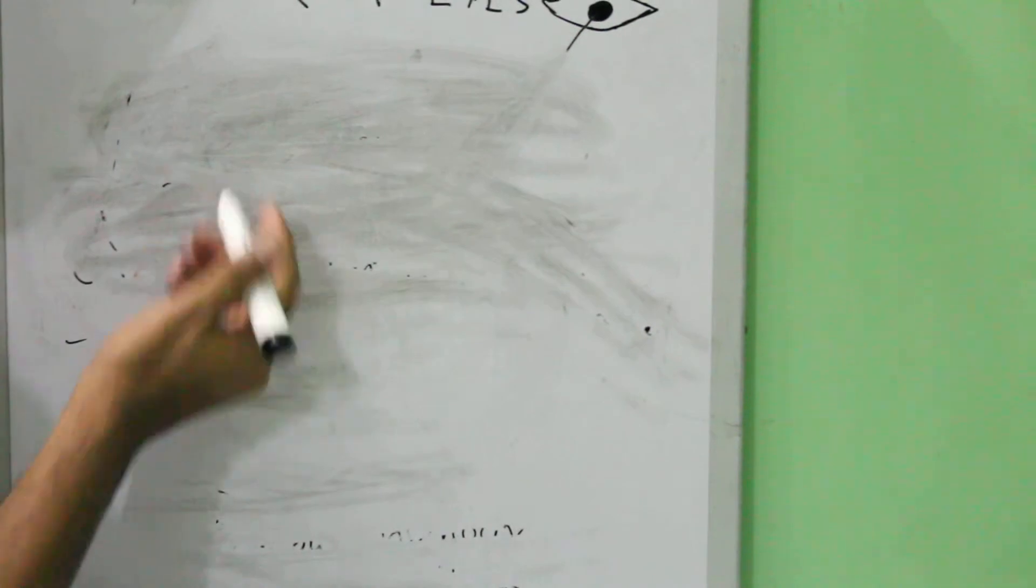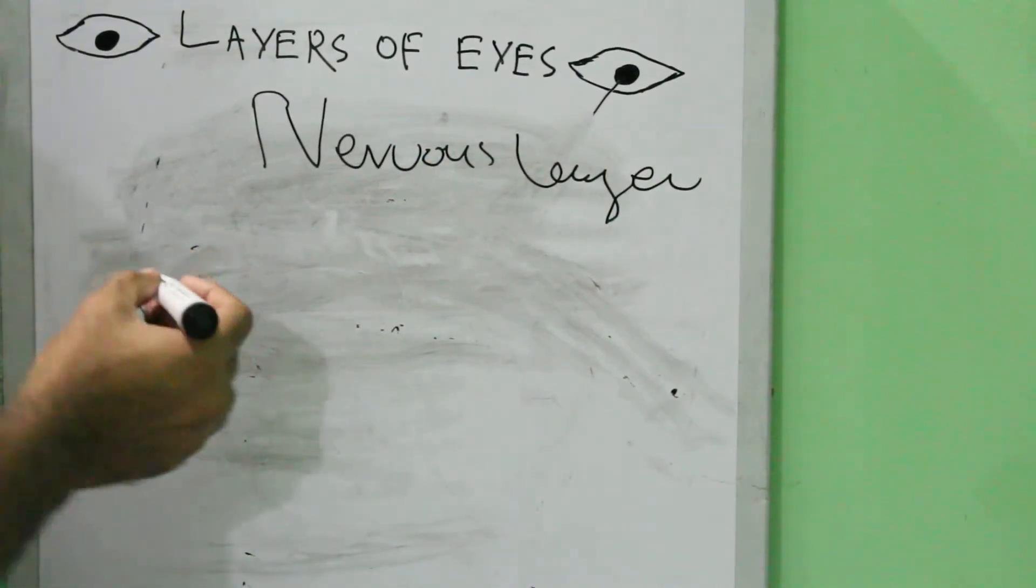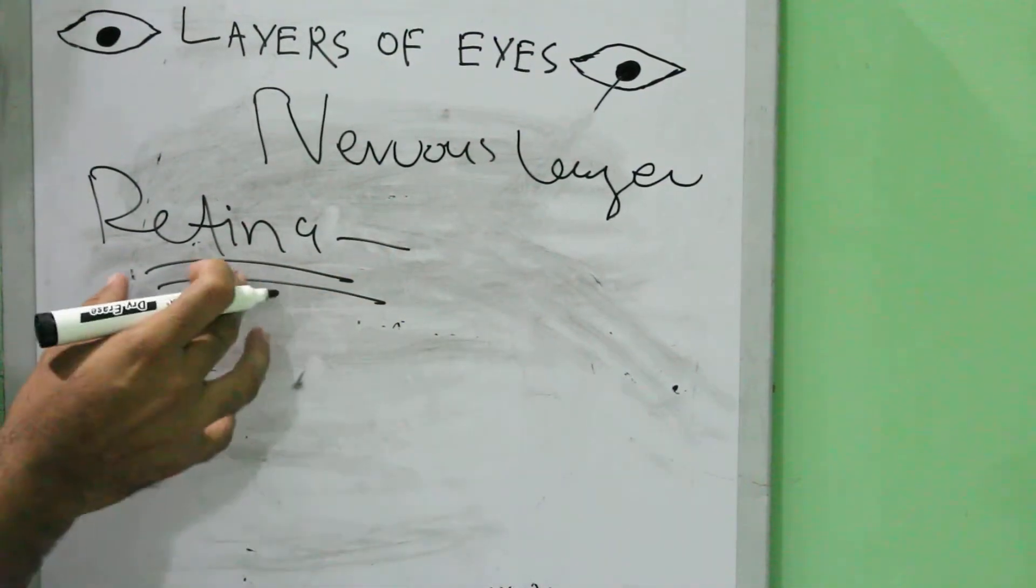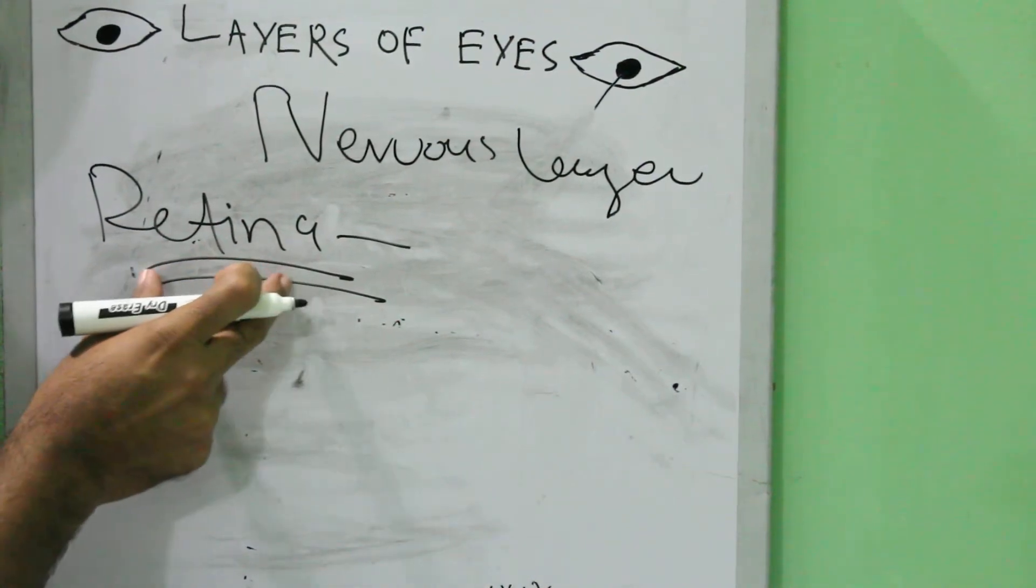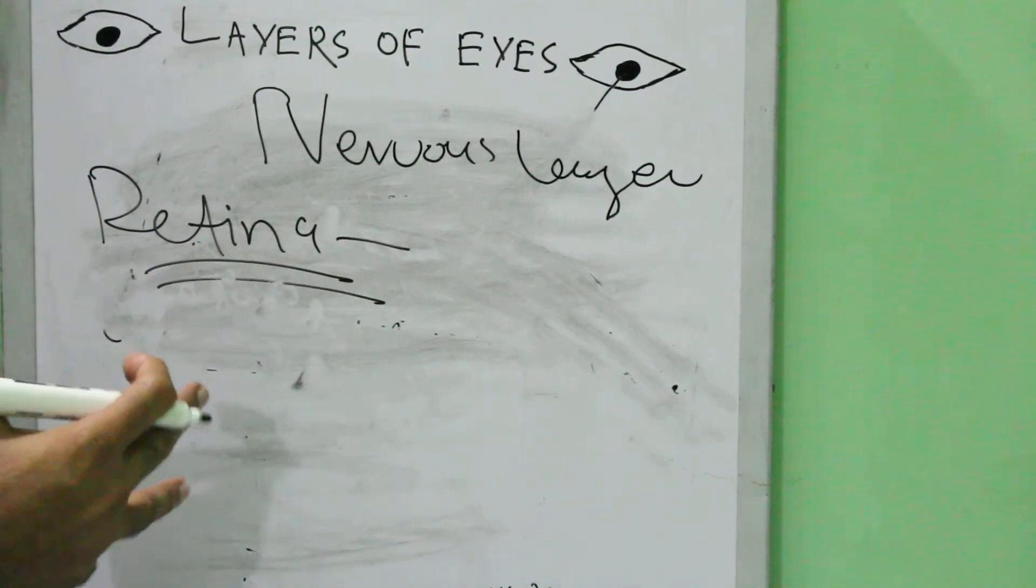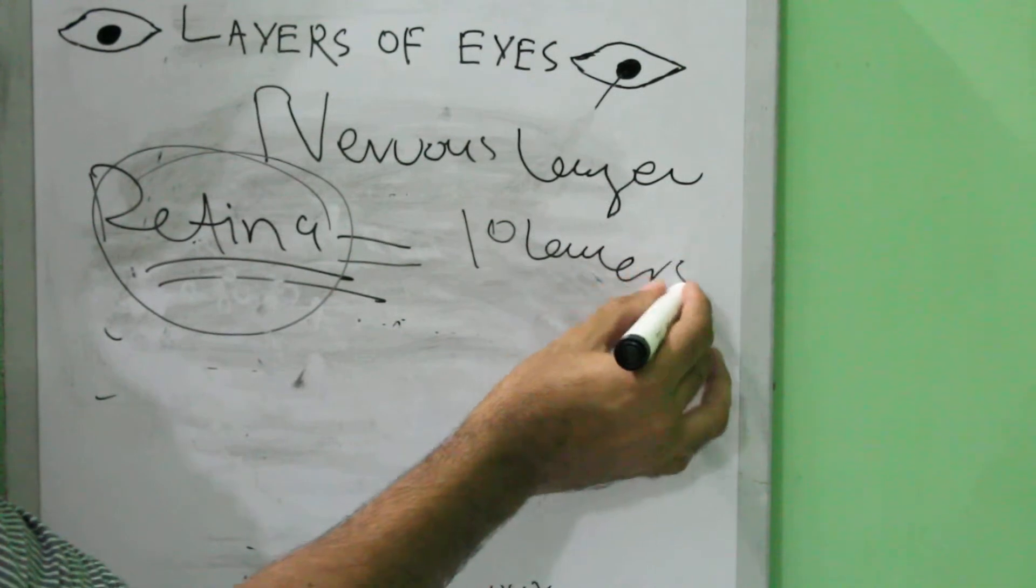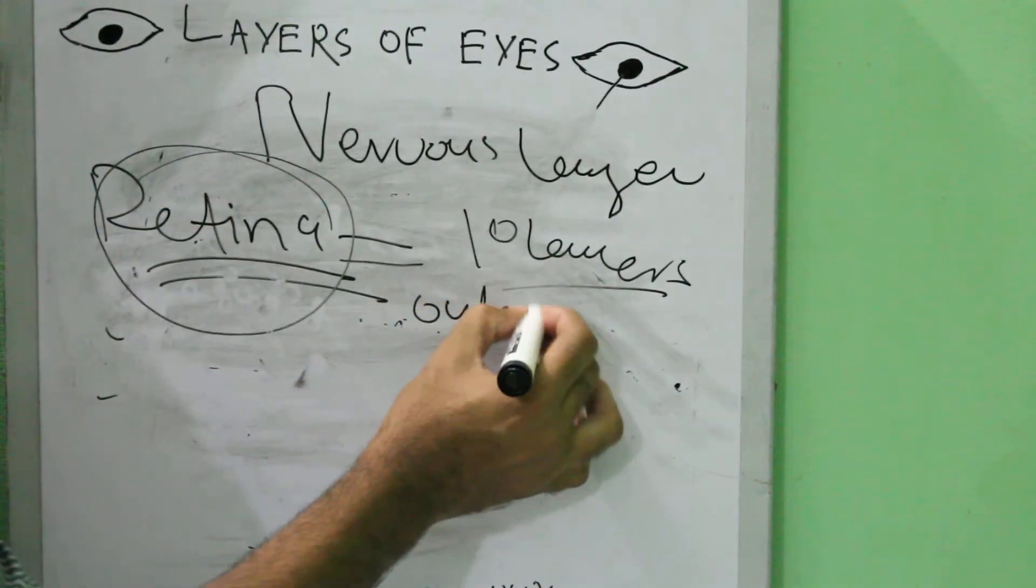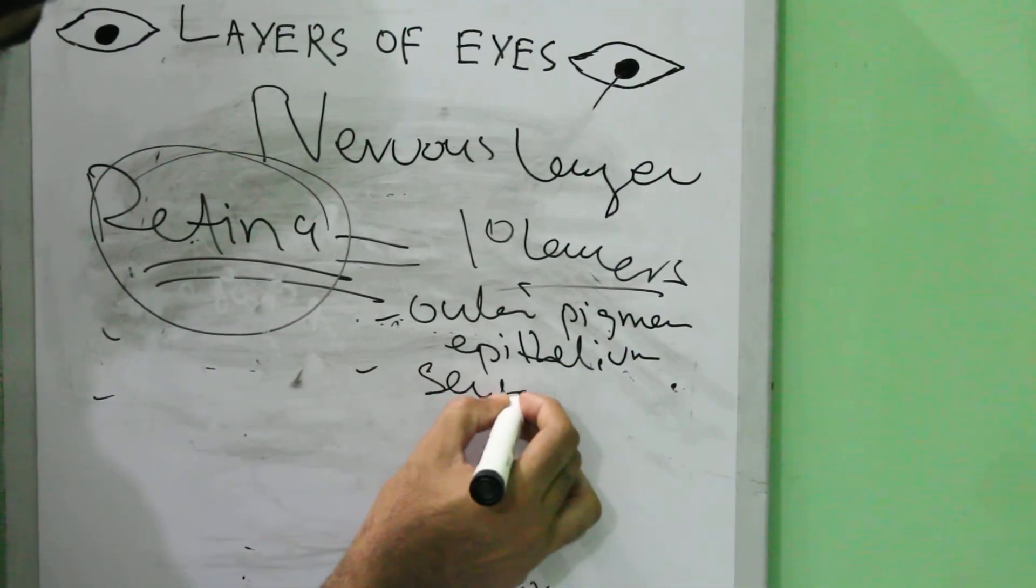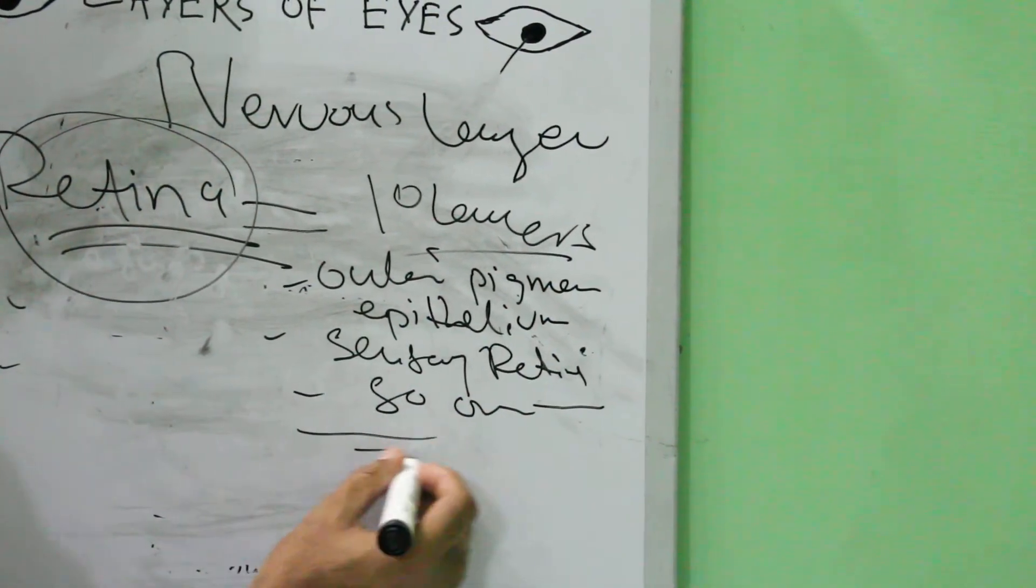The last layer is the most important layer and it is the innermost layer - the nervous layer called retina. This is the main thing you should know because this part, the retina, when it receives the electrical signals like light rays, it transfers the rays to the brain and the light reflex is created so that the human being can see. The retina has 10 layers: outer pigment epithelium, sensory retina, and so on.